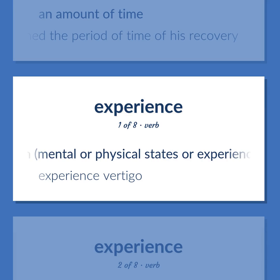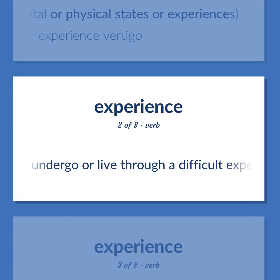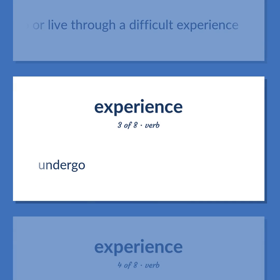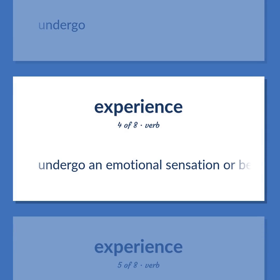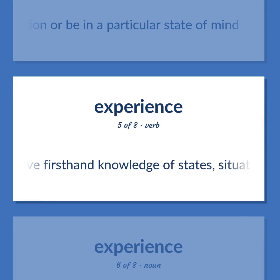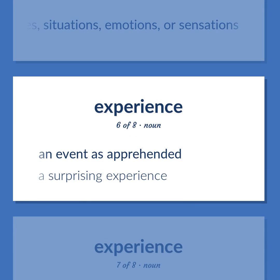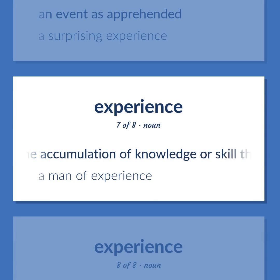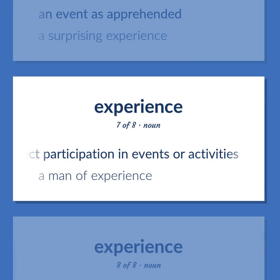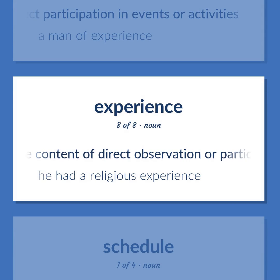EXPERIENCE: Go through mental or physical states or experiences — experience vertigo. Undergo or live through a difficult experience. Undergo an emotional sensation or be in a particular state of mind. Have first-hand knowledge of states, situations, emotions, or sensations. An event as apprehended — a surprising experience. The accumulation of knowledge or skill that results from direct participation in events or activities — a man of experience. The content of direct observation or participation in an event — he had a religious experience.